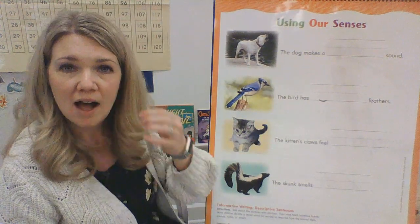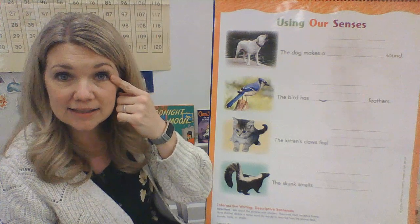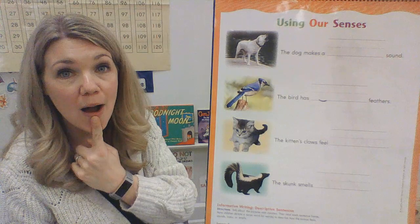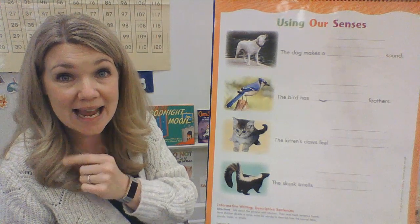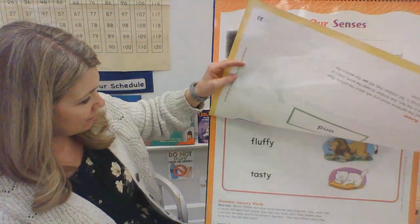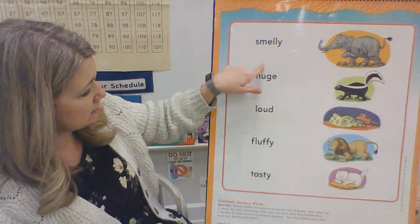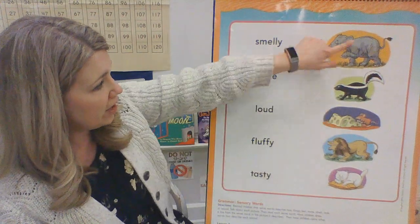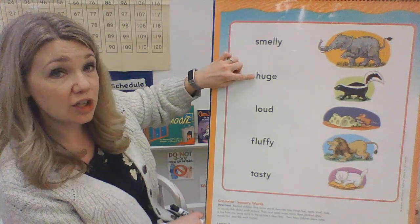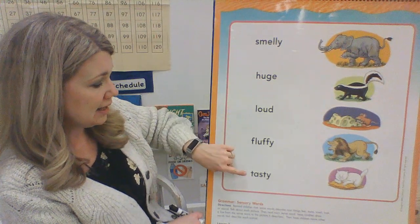Do you remember our five senses? Our ears hear. Our eyes see. Our nose smells. Our mouth or tongue tastes. And our hands touch. Those are our five senses. Now since we did that, we need to match up these words — these sense words — with their picture over here. So let me read the words to you: we have smelly, huge, loud, fluffy, tasty.